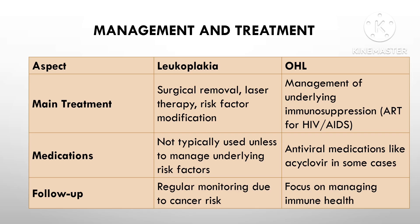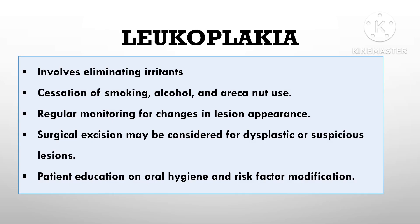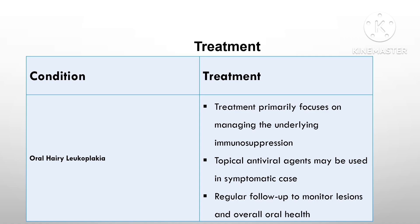Treatment approaches differ significantly. For leukoplakia, the goal is to prevent progression to cancer. Treatment includes eliminating the cause — asking the patient to stop tobacco use or removing sources of chronic irritation like sharp teeth or ill-fitting dentures. In cases where the lesion is large or shows signs of dysplasia, surgical removal might be recommended, and patients should have regular follow-ups to monitor any changes.